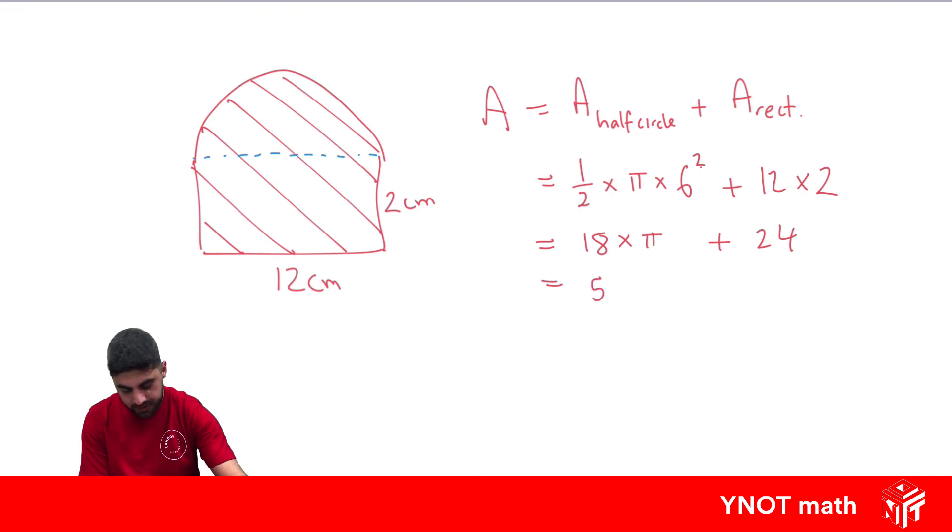18 times pi is going to give us 56.5 to one decimal place plus the 24. And we're going to get 80.5 centimetres squared to one decimal place.